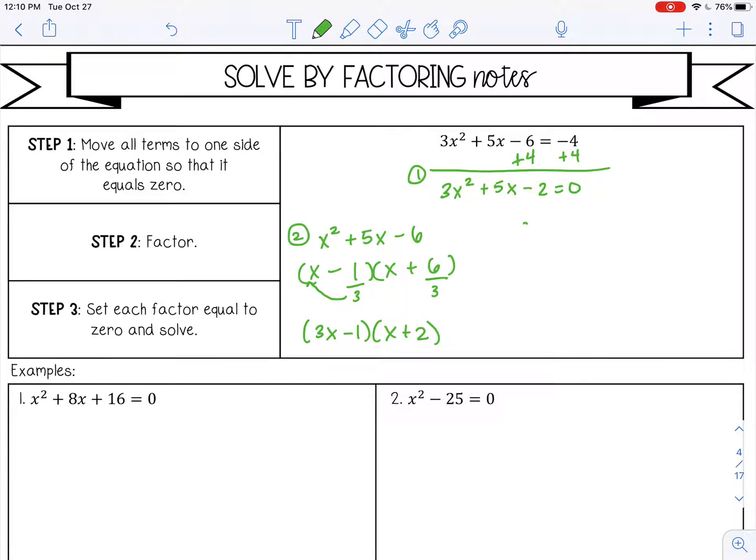Now we have it factored. Our last step is to set each factor equal to zero, and you can get rid of the parentheses when you do this and solve. Plus one plus one, divided by three, divided by three, so x is one third. Minus two, minus two, x is negative two.